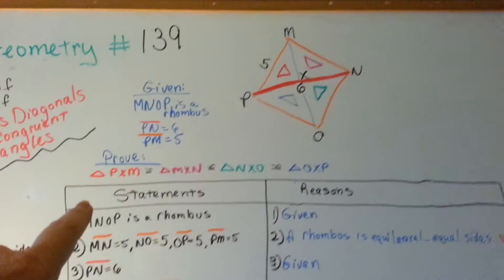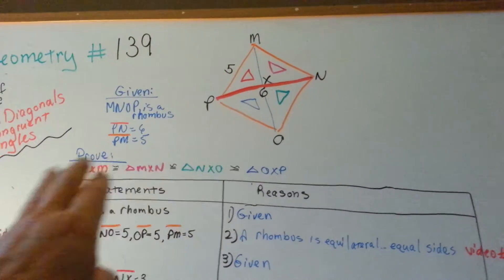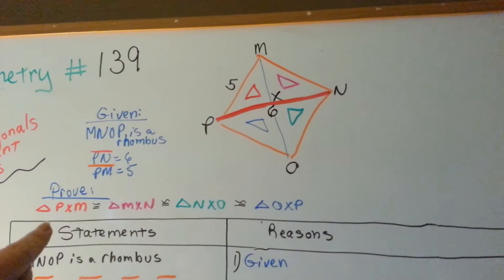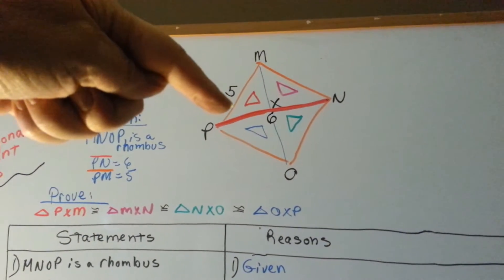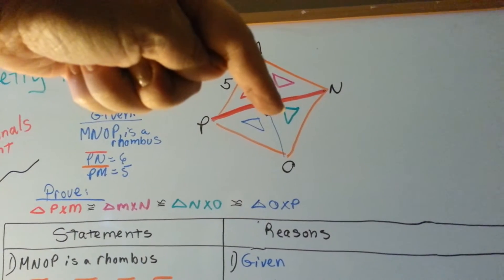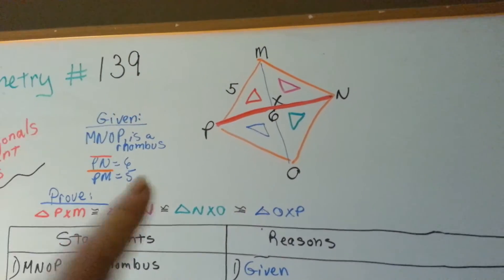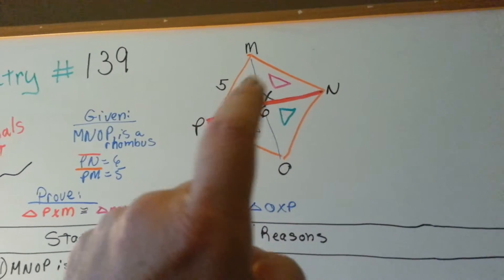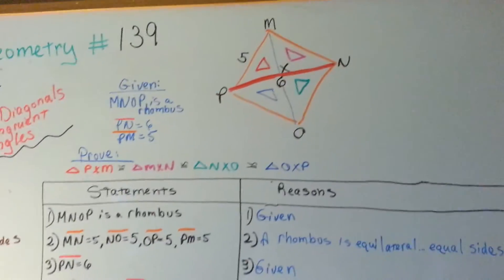So we need to prove that, and to keep it from being a jumble of angles like this I just color coded them. We need to prove that the red triangle is congruent to the pink one, congruent to the green one, congruent to the blue one, that these are all congruent to each other. That's what we're trying to prove.